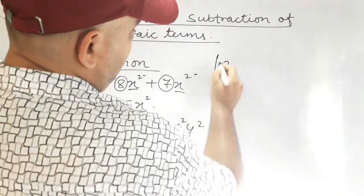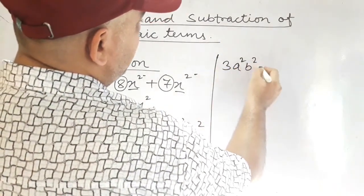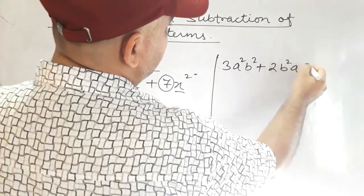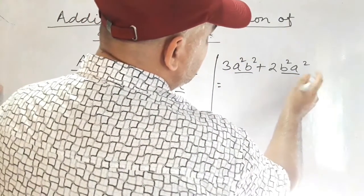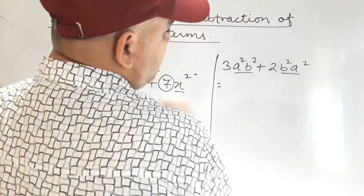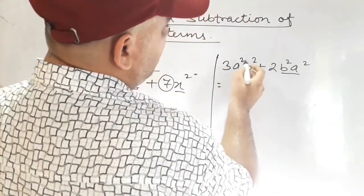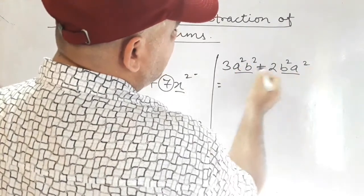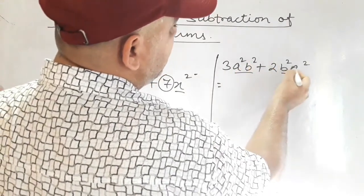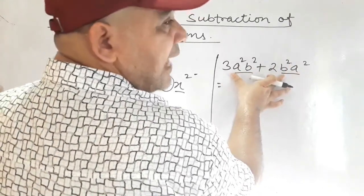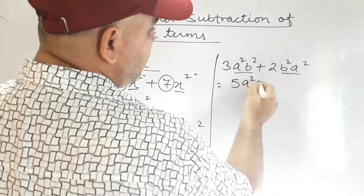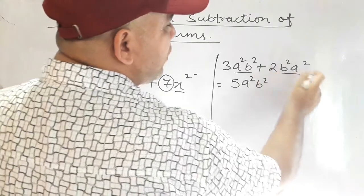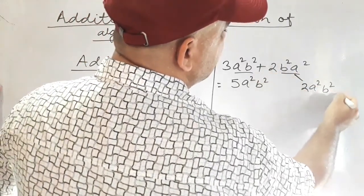Another example: 3a squared plus 2b squared. Some students see a squared and b squared and think they are unlike terms. But looking carefully, the base a has power 2, and the base b has power 2 — both terms are like terms. So we add: 3 plus 2 equals 5, giving 5a squared b squared. Note that 2b squared a squared is the same as 2a squared b squared. Don't get confused.